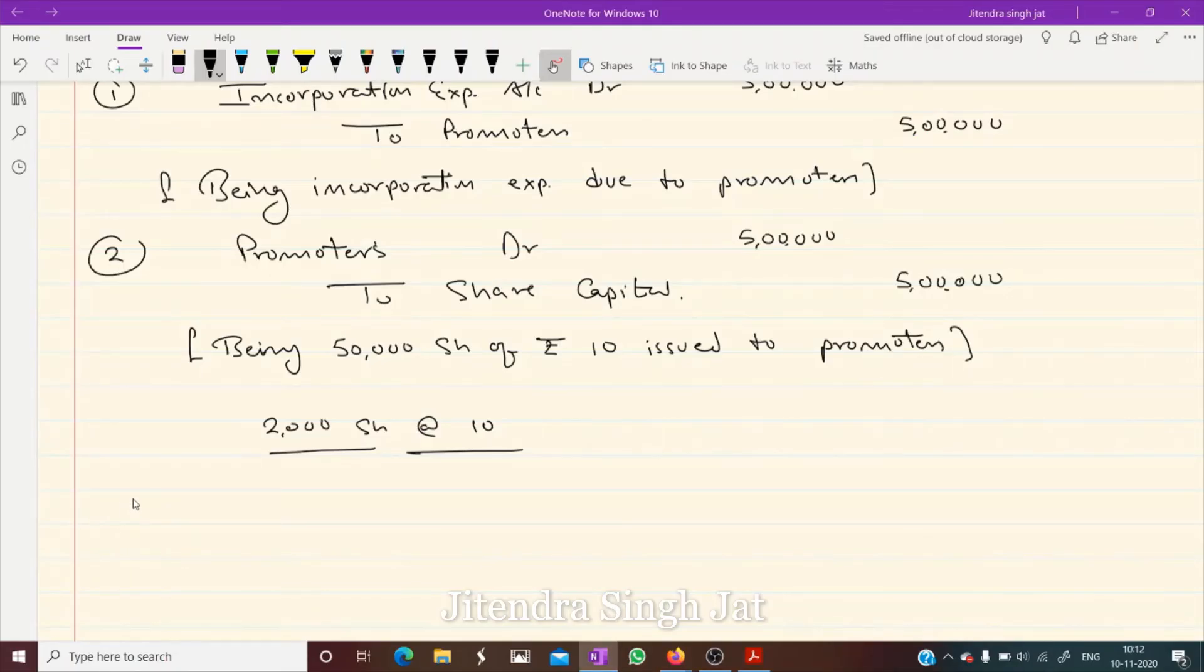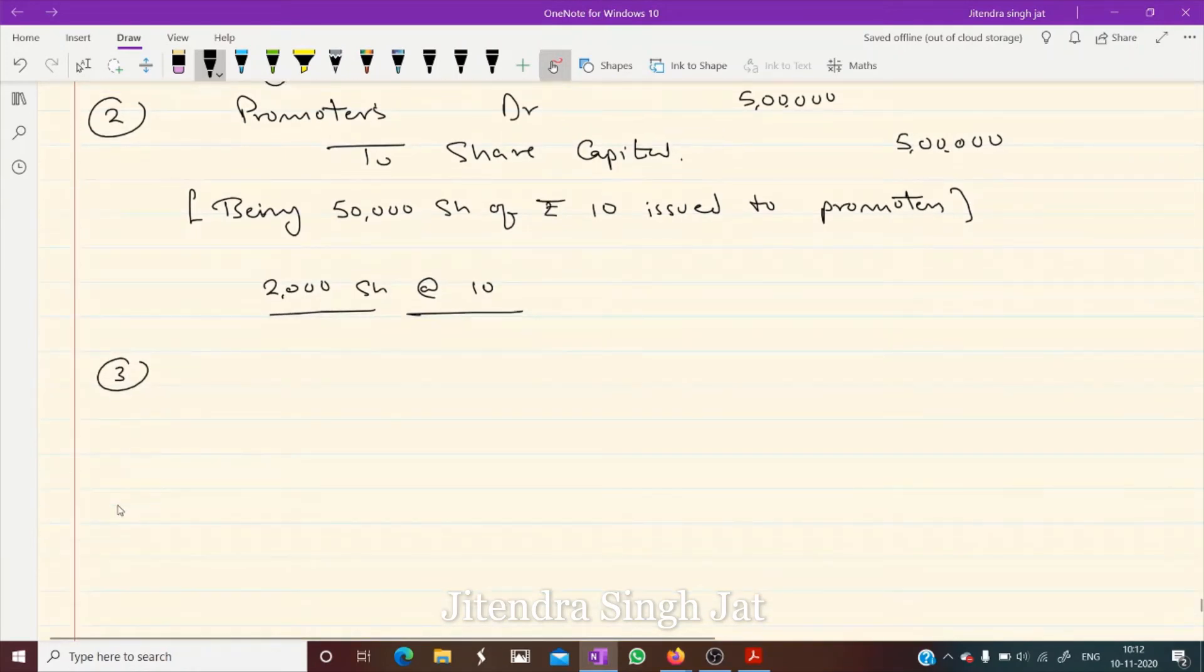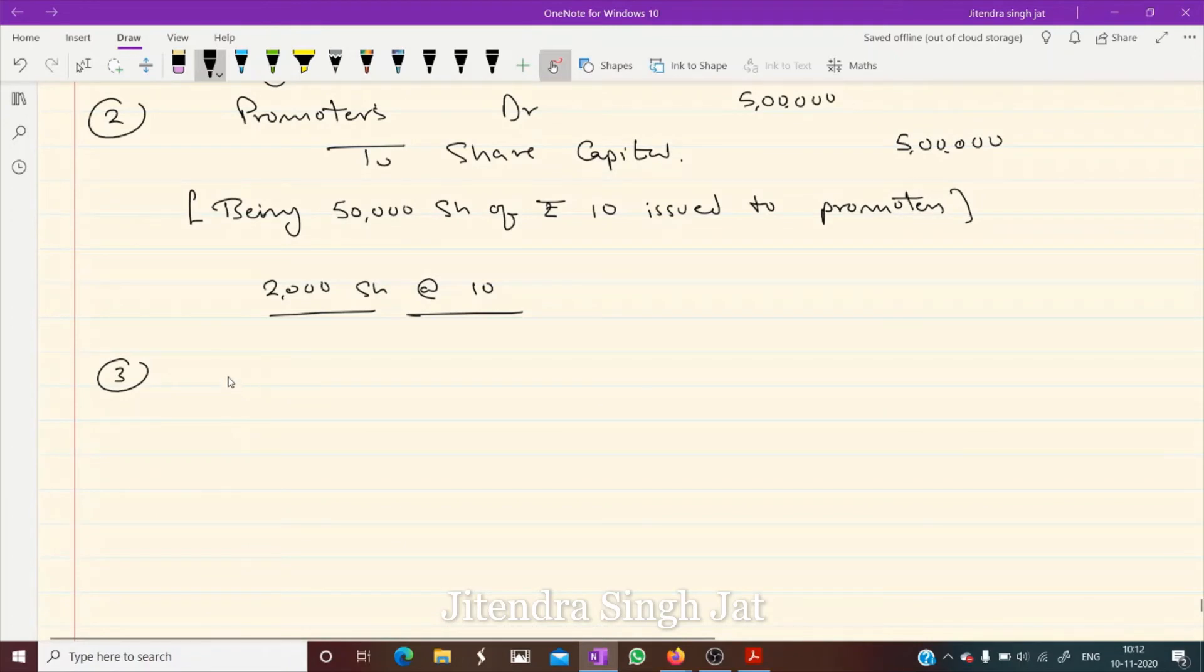What we give to underwriters? Underwriting commission, yes or no. Underwriting commission is expense for business, for the company. Underwriting commission account debit to underwriters. How much? 2,000 multiplied by 10, 20,000 rupees.